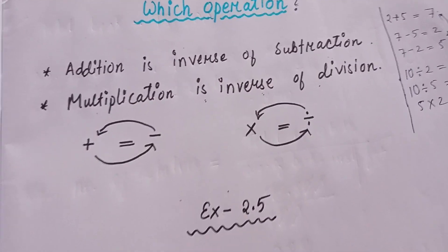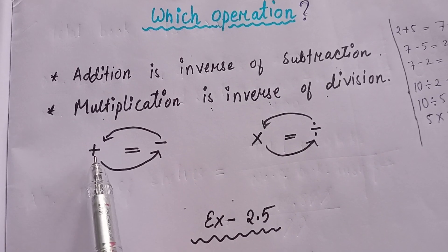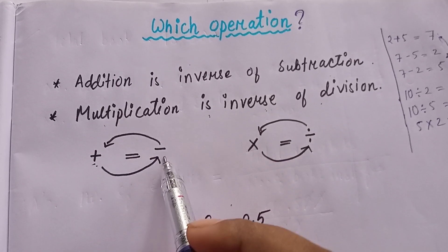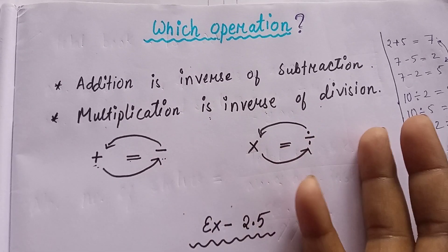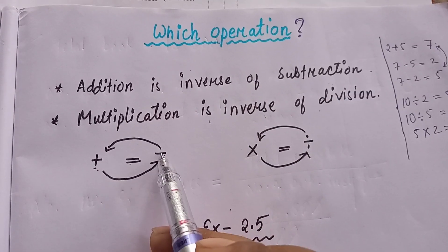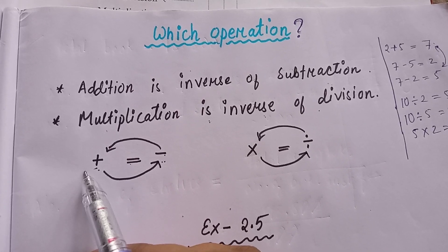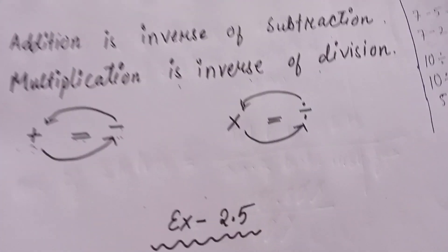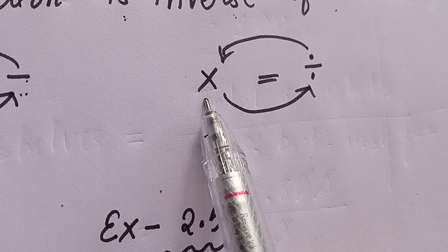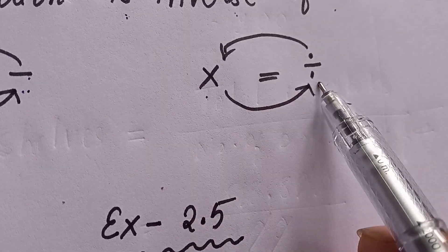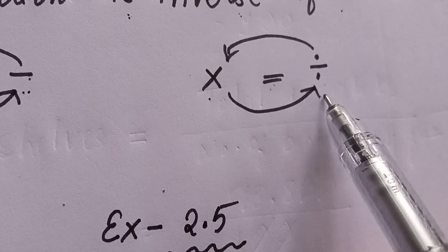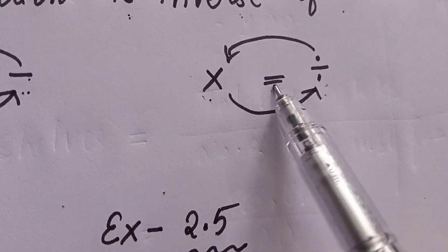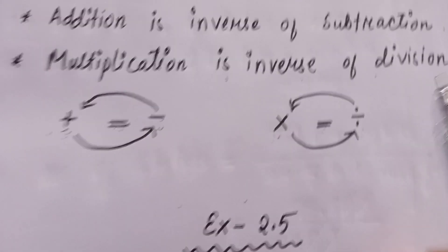To decide which operation to use, always remember: when a plus sign moves to the right of the equal sign it turns into negative (minus), and when a minus sign comes to the left of the equal sign it becomes positive (plus). Similarly, a multiplication sign when it goes to the right of the equal sign becomes division.